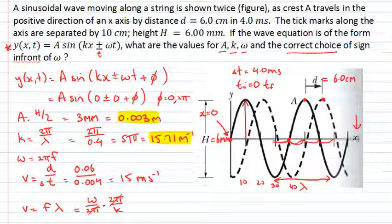I wanted to find omega, so omega is just going to be equal to k times my velocity. I know my k is at 15.71 multiplied by 15 gives me 235. So that will be in radians per second, because I've kept everything in SI units.